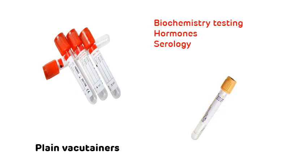These yellow or golden colored vacutainers are called gel vacutainers. They contain a polymer gel inside. They are generally yellow or golden in color and are used for biochemistry and hormonal tests.